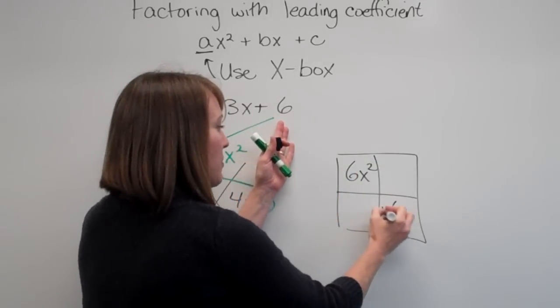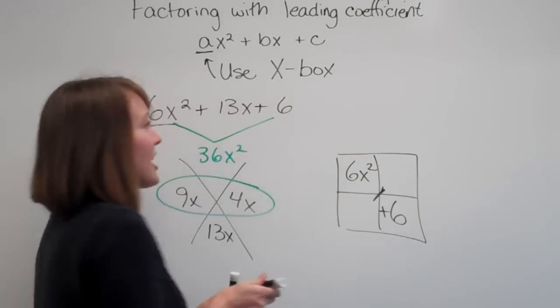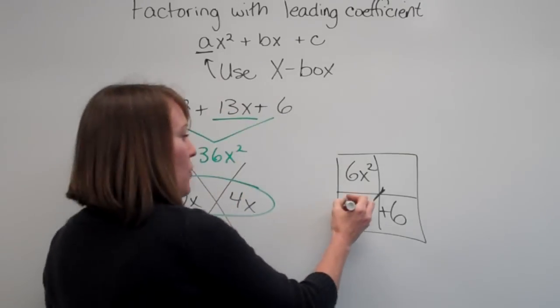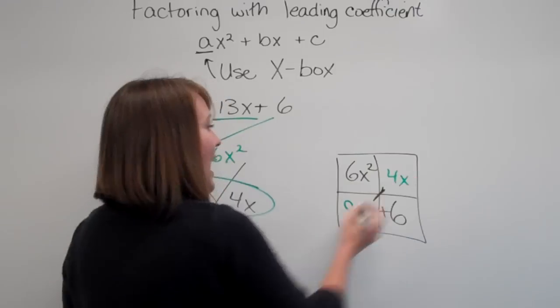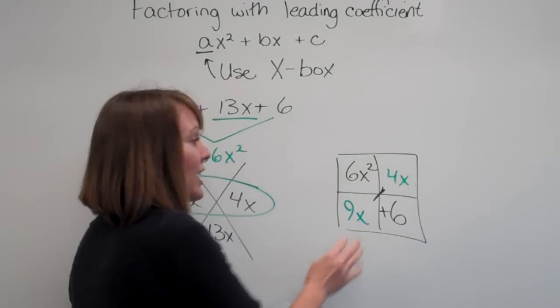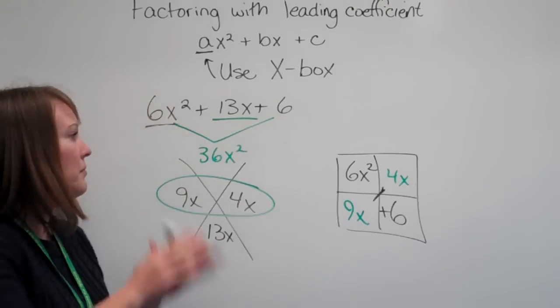Last term goes in the last box. And we know that these guys are going to add up to 13x, which we just said was 9x and 4x. And it doesn't matter whether you put your factors here, your 9x here or here. You'll get the same answer.